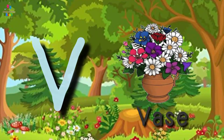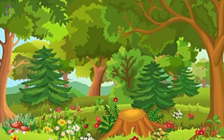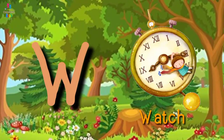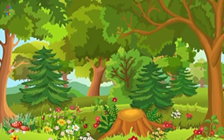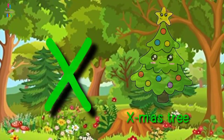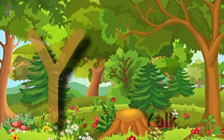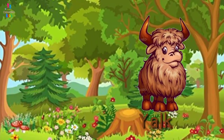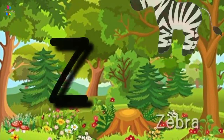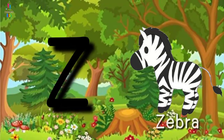V for vase, W for watch, X for accessory, Y for yarn, Z for zebra.